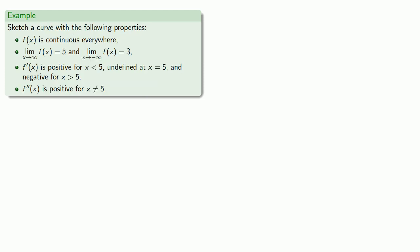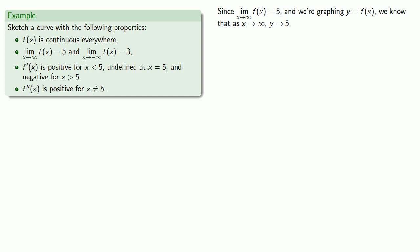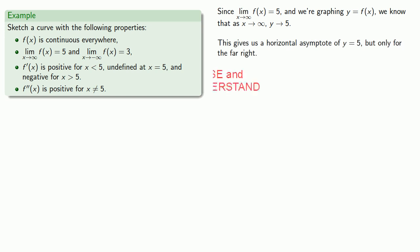What if we have a different set of information? Since the limit as x goes to infinity of f of x is equal to 5, and we're graphing y equals f of x, we know that as x goes to infinity our y values go to 5. This gives us a horizontal asymptote of y equals 5, but it's useful to remember we only need this for the far, far right of the graph.